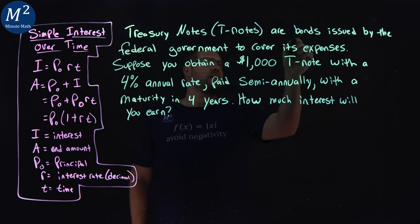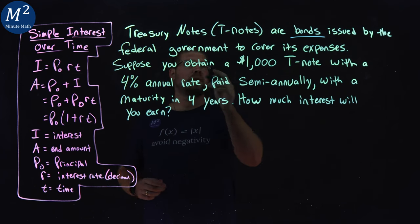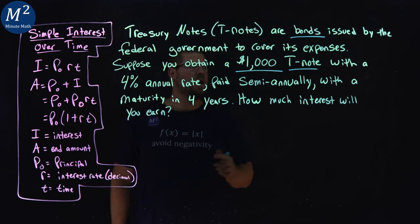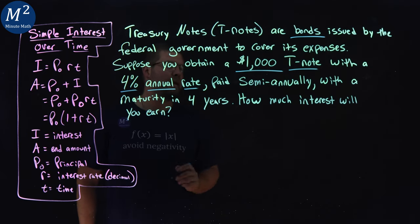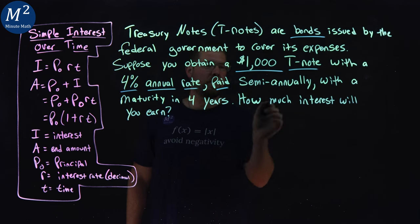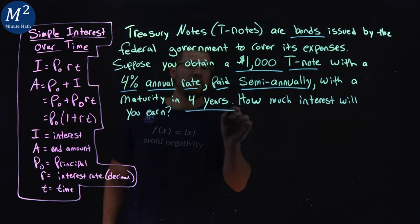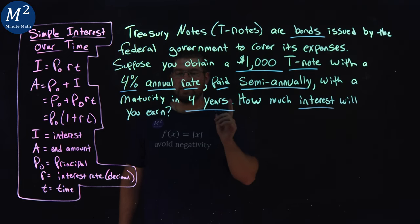This tells us it's a bond involving simple interest over time, covering expenses. You obtain a $1,000 T-note, a special type of bond, with a 4% annual rate paid semi-annually, with a maturity in four years. How much interest will you earn?